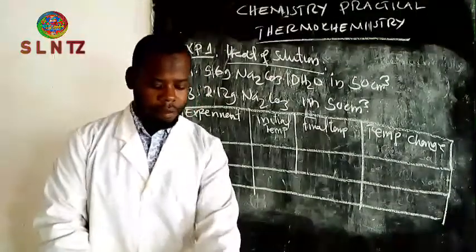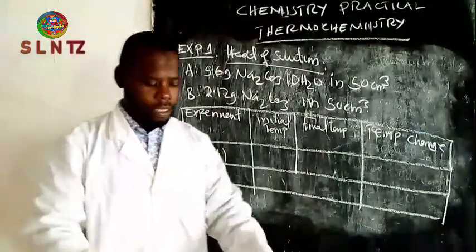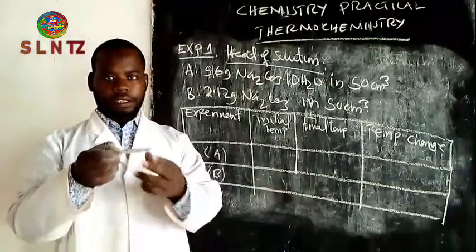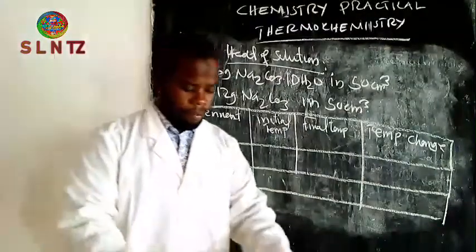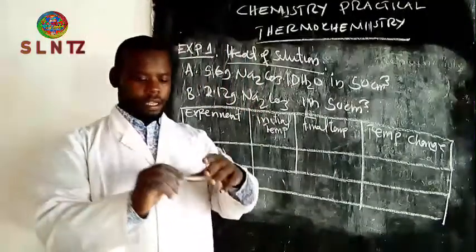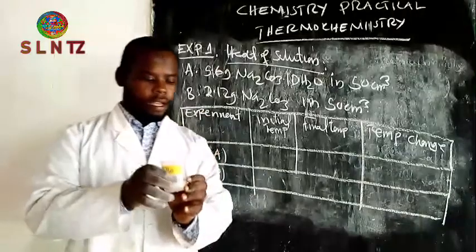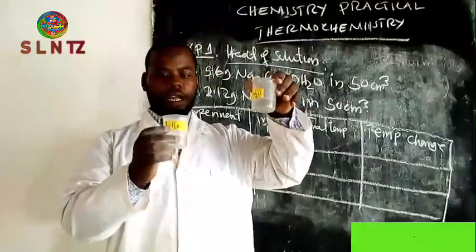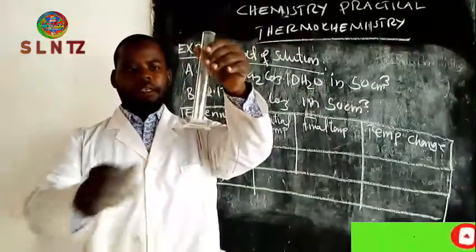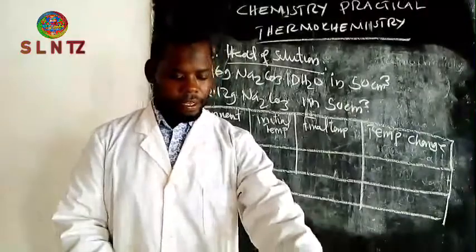First, we have a thermometer here to record the temperature. I have a salt — this is hydrated sodium carbonate — and then I have anhydrous sodium carbonate. And then I have water. This is for the first procedure and this will be for the second procedure to find the temperature. We also have a measuring cylinder, which is used to measure the volume of water within our beaker.